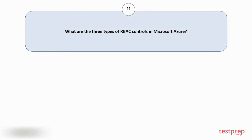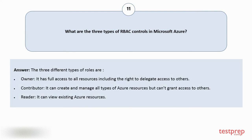Question number eleven: what are the three types of RBAC controls in Microsoft Azure? Your answer is: the three different types of roles are: one, Owner — has full access to all resources including the right to delegate access to others; two, Contributor — can create and manage all types of Azure resources but can't grant access to others; three, Reader — can view existing Azure resources.